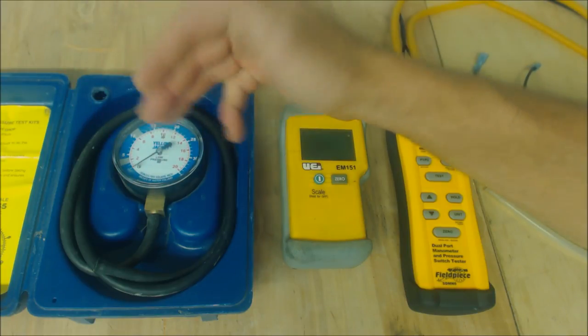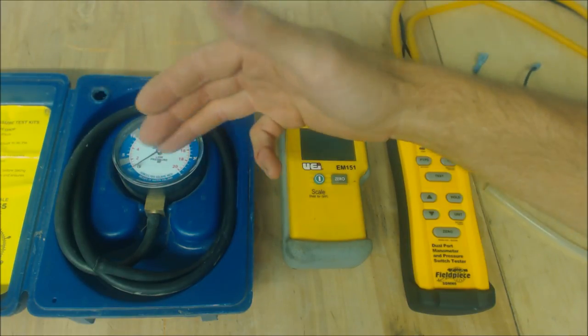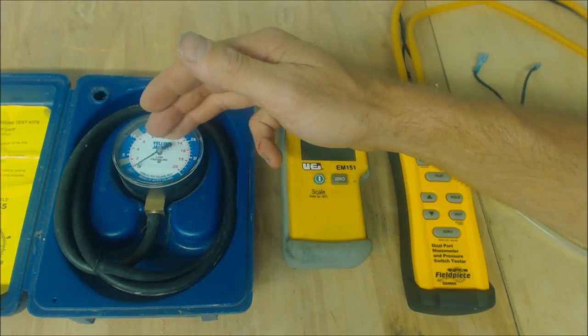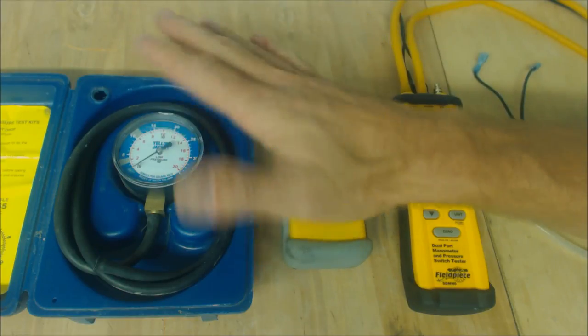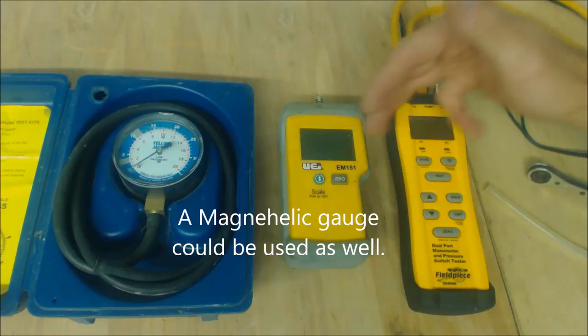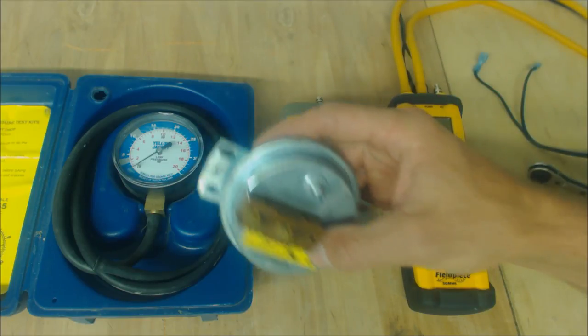This takes the analog manometer out of play. It could be used for single-stage gas valves or checking the inlet pressure at a house, but basically we're using digital manometers because we can get a very accurate reading.